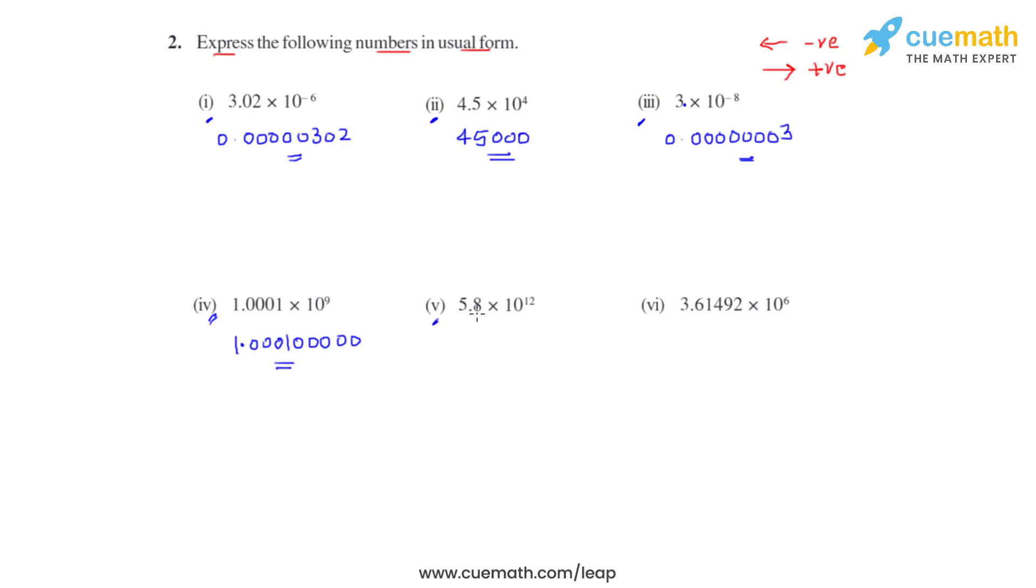Coming to the fifth bit, the power is positive 12, so the decimal must move towards right by 12 places. We get the answer as 5.8 followed by 11 zeros.